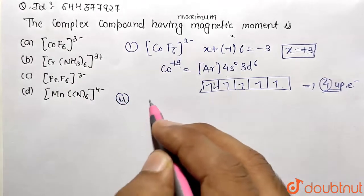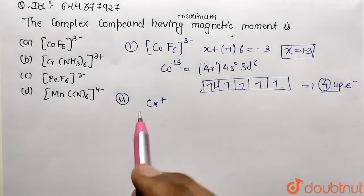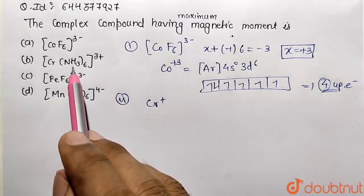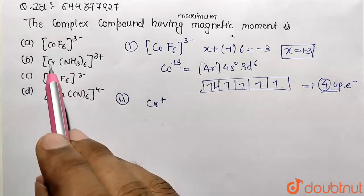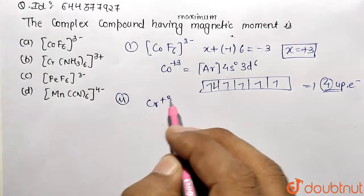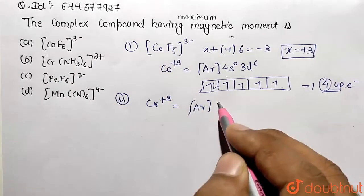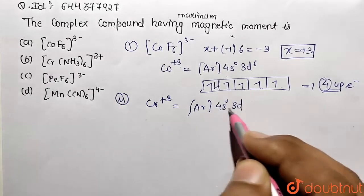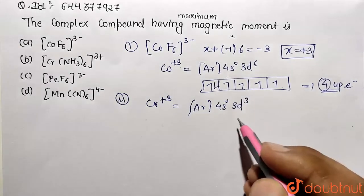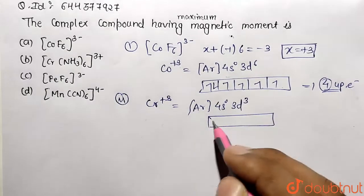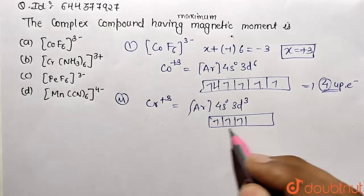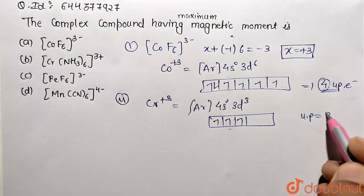Here we are given chromium. You can directly calculate the oxidation state. This is a neutral ligand, so 0, and this is X. The overall state will be positive 3. How do I write the configuration? It's argon, 4s will be 0, and we are left with only 3d³. If we represent this as 1, 2, 3, the number of unpaired electrons is 3.